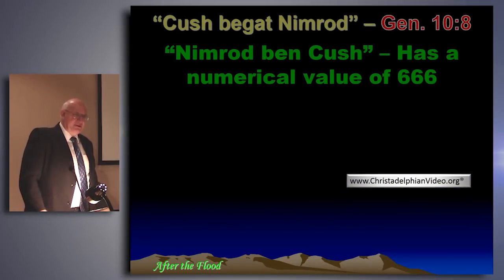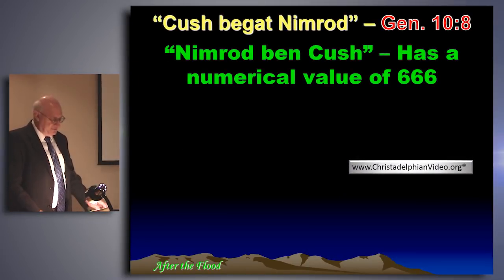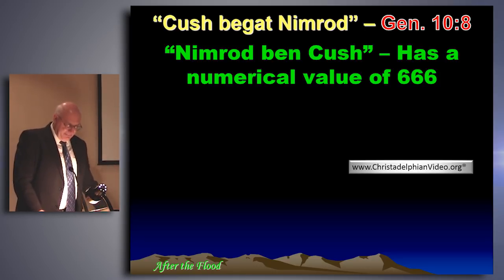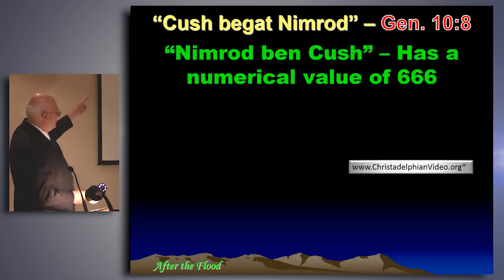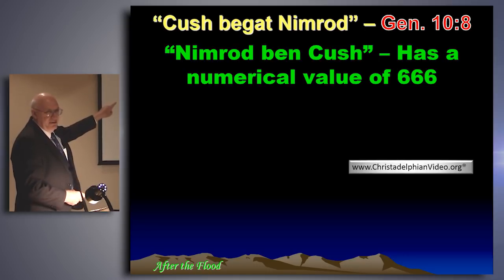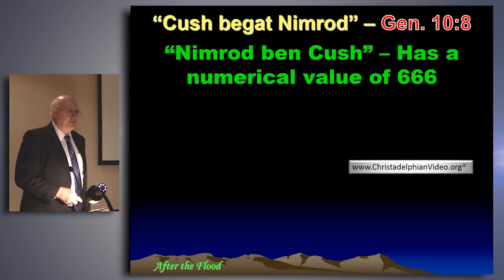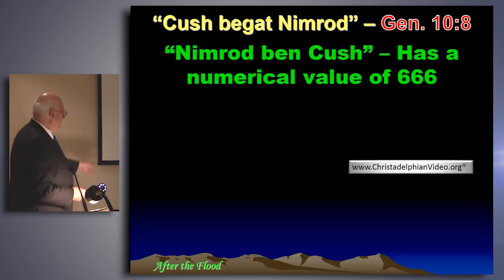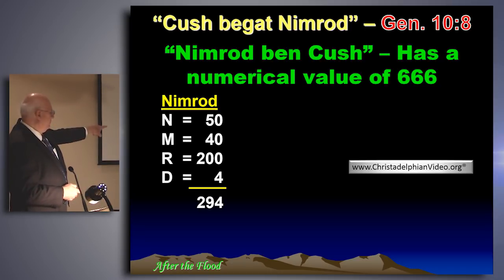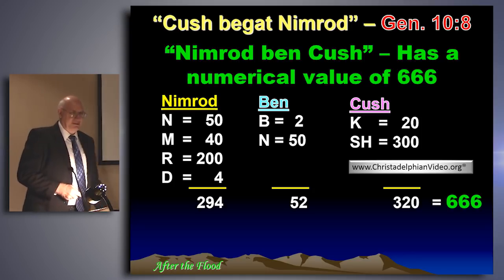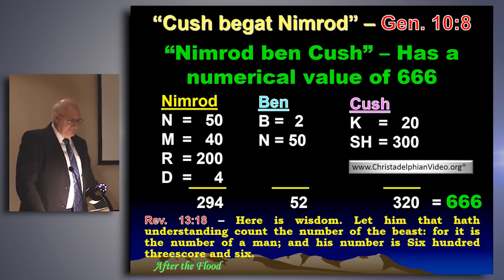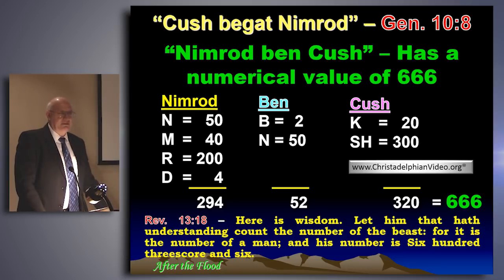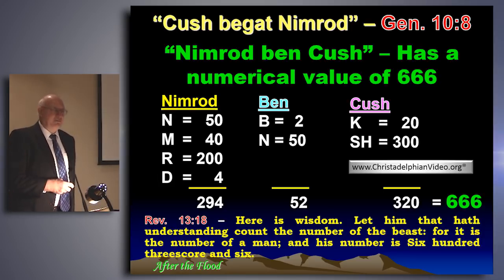Here's a fascinating fact: taking the words from Genesis 10:8 — Nimrod, Ben (which means a son), and Cush his father — these three Hebrew words have a numerical value of 666. Nimrod has a value of 294, Ben is 52, and Cush is 320, which just happens to be 666. This relates to Revelation 13:18: 'Here is wisdom — let him that hath understanding count the number of the beast, for it is the number of a man. And his number is 600 threescore and six.'